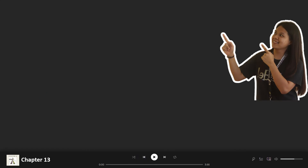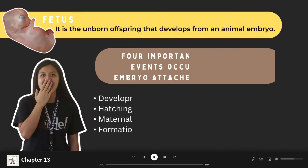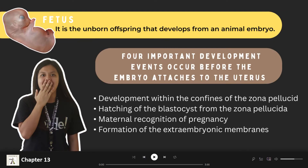Lastly, we have the term fetus. It is the unborn offspring that develops from an animal embryo. The terms embryo, conceptus, and fetus are often used interchangeably to describe the developing organism.